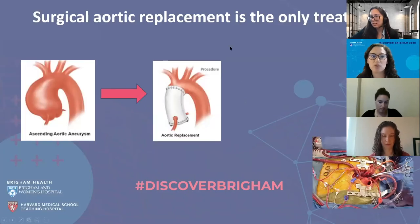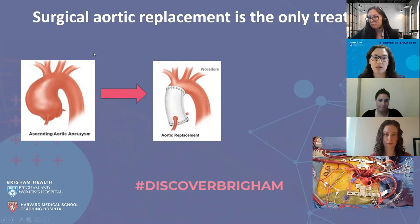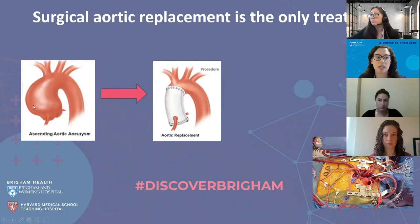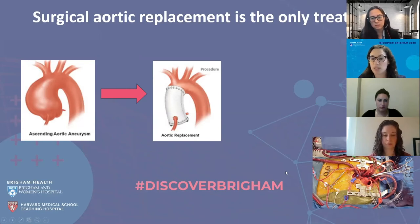Currently, the only treatment is surgical aortic replacement. In our division of cardiac surgery, many times a week we see patients with an ascending aortic aneurysm. The surgeon will resect the portion of the ascending aortic aneurysm and replace it with a graft. This is not a small procedure — on the bottom right you can see the surgeon's view of the surgery. It is a very invasive, open heart procedure, and it is not without risk.